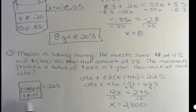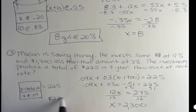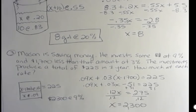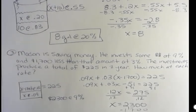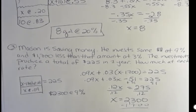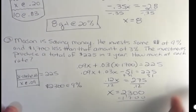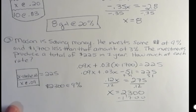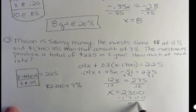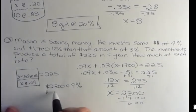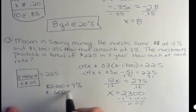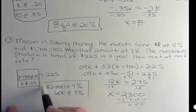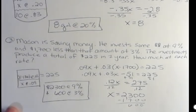What is 2,300? 2,300 was x. X is the amount he put in the 9% account. So he put $2,300 at the 9% rate, and he did $1,700 less than that. So we would subtract $1,700 from that to figure out what he did at the other account. And so 2,300 minus 17 is $600. That means he put $600 in the 3% account. And that makes up his total investment.